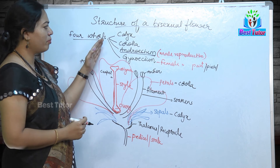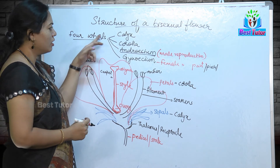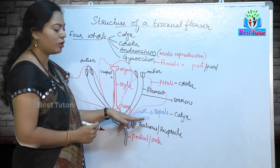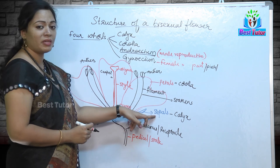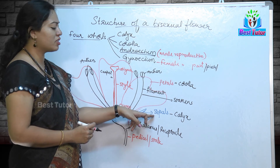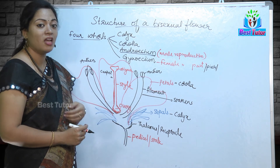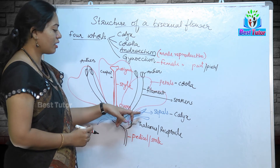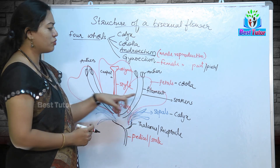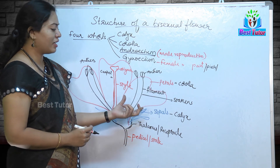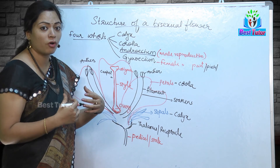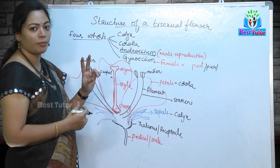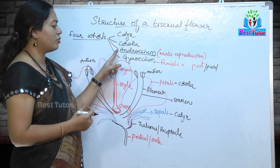Now we have observed the four main whorls or parts of a flower. The first part is calyx — the green colored sepals which perform photosynthesis to produce food for the growth of floral parts. Next, the petals are known as corolla — the bright colored parts which help attract insects for pollination. Then we have the two important reproductive parts: androecium and gynoecium.